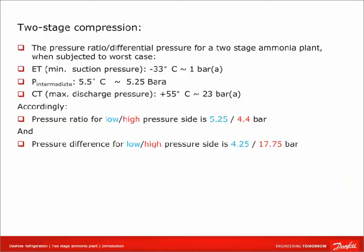Looking at the pressure ratio for a two-stage ammonia plant at worst case — -33°C at the suction side and +55°C at the discharge side — this gives a pressure ratio of 5.25 or 4.4 bar and a pressure difference of 4.25 or 17.75 bar. Based on this, we need to choose the compressor.